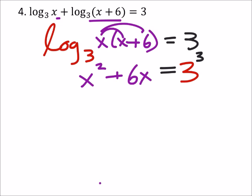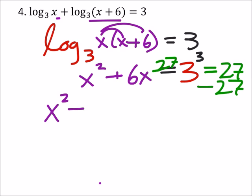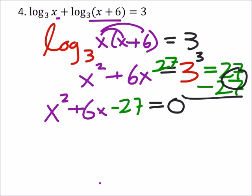So 3 cubed is 27, and if I subtract 27 from both sides, then I have a quadratic. X squared plus 6X minus 27 equals, now that would be 0, right, because we canceled those out.